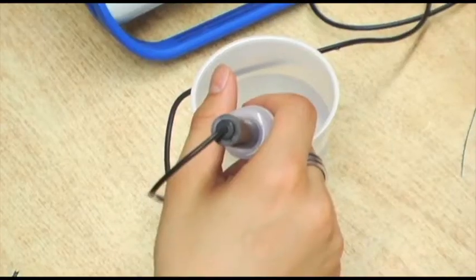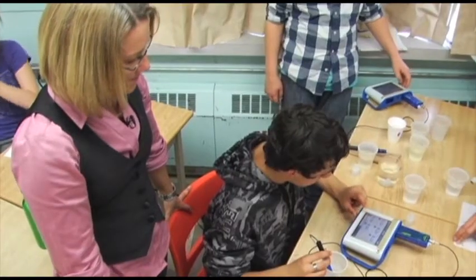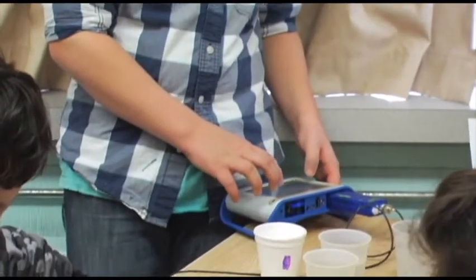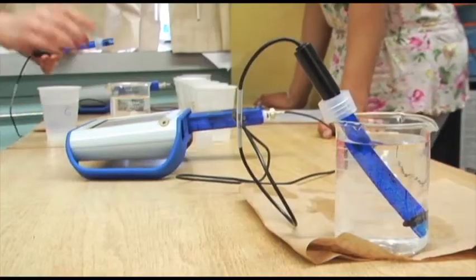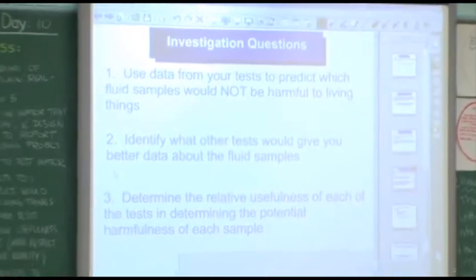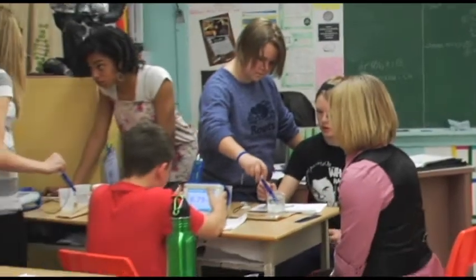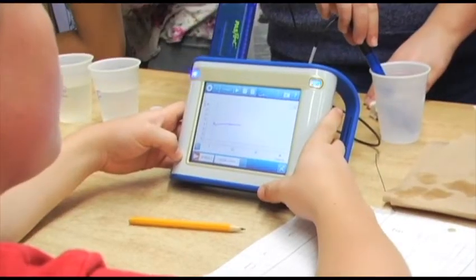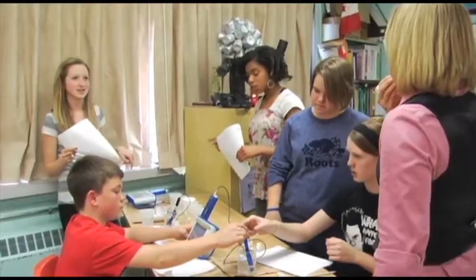The students are given something that tweaks their interests. They determine variables, independent and dependent variables, and then design their own experiments around the probeware. It creates a more authentic scientific inquiry. When we see these students in small groups, that's when they feel comfortable to ask questions, to share their answers, and to go beyond. 6.8 for the pH, and this one's 5.7. So they're still pretty different, but they're both under 7.